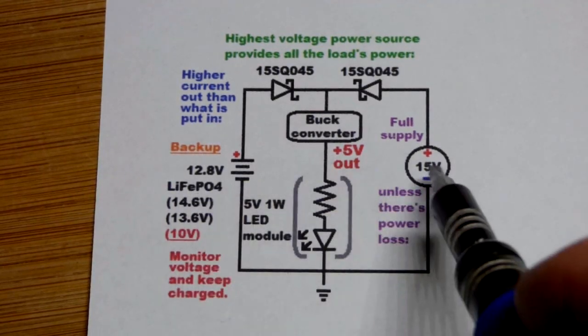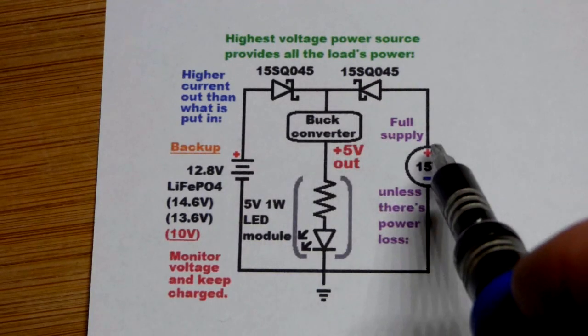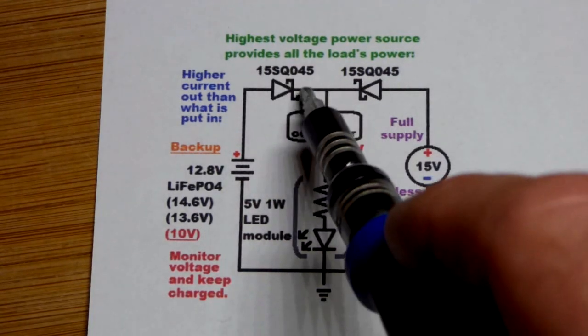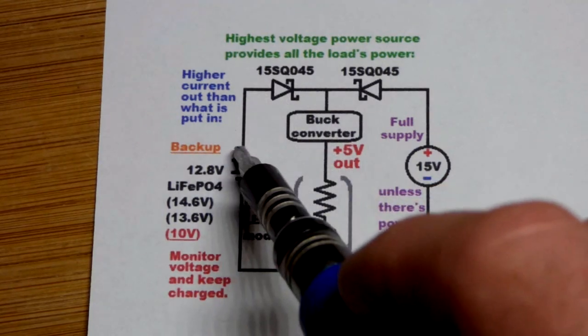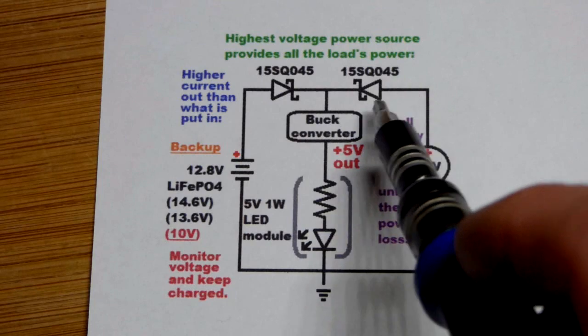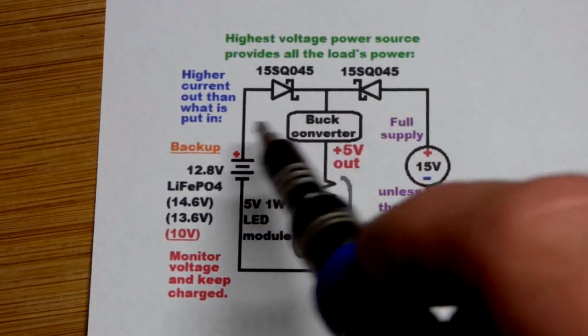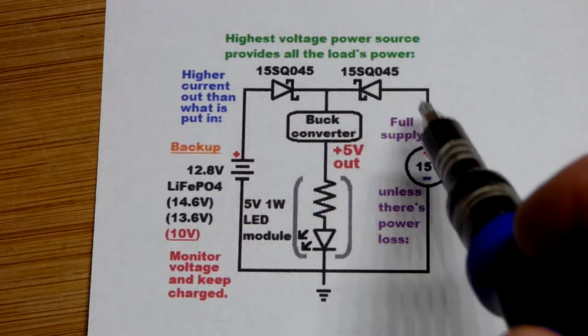If we lose the voltage or it drops below the battery voltage for whatever reason, then the battery will kick in. While this one's providing power, that diode, that Schottky diode, makes it so it can't charge that battery anymore, which is ultimately what it would do if we had a connection there. It can't go that way, it can only go this way.